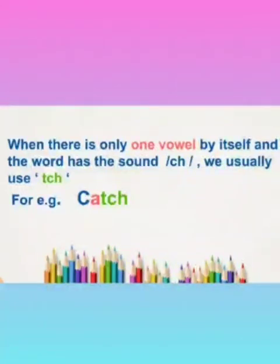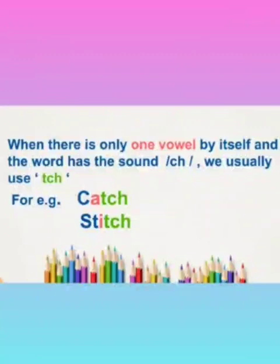See the next example: stitch. Now here the vowel is i and it has no letter friend. So after i you hear the ch sound, so it is stitch — s-t-i, then we add t-c-h.